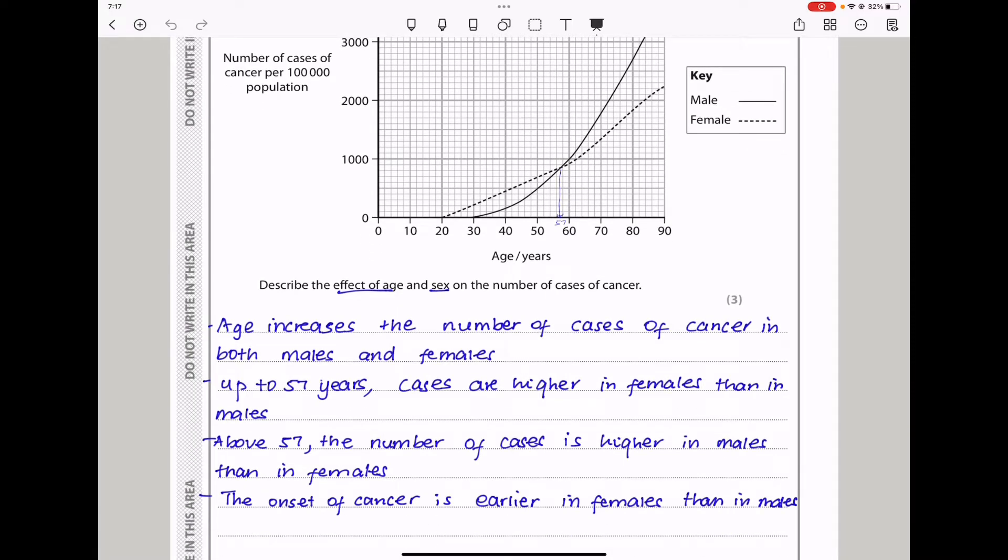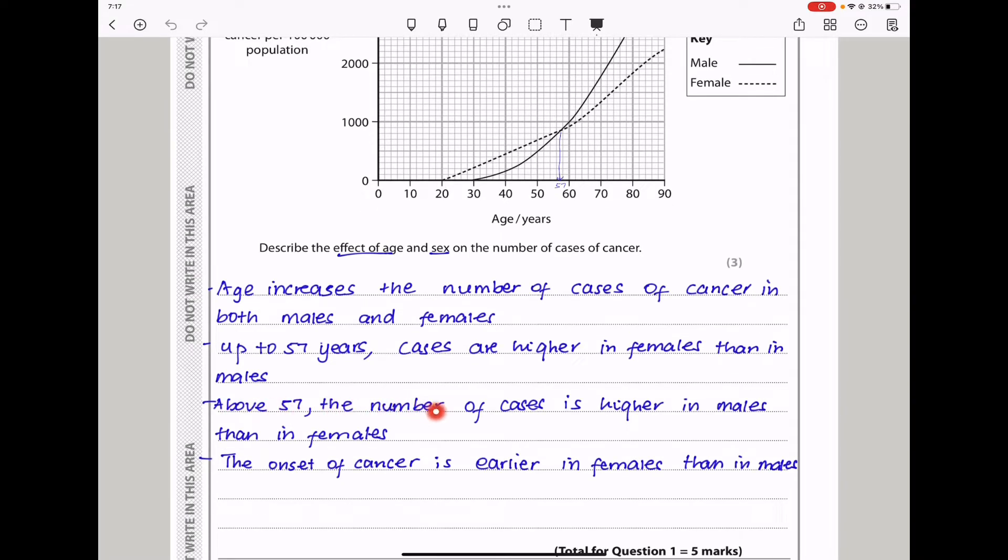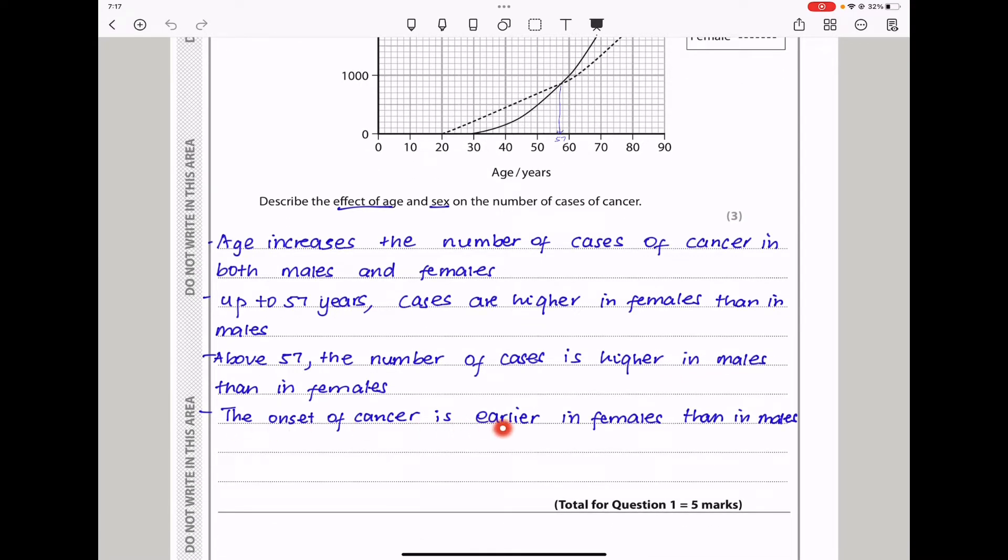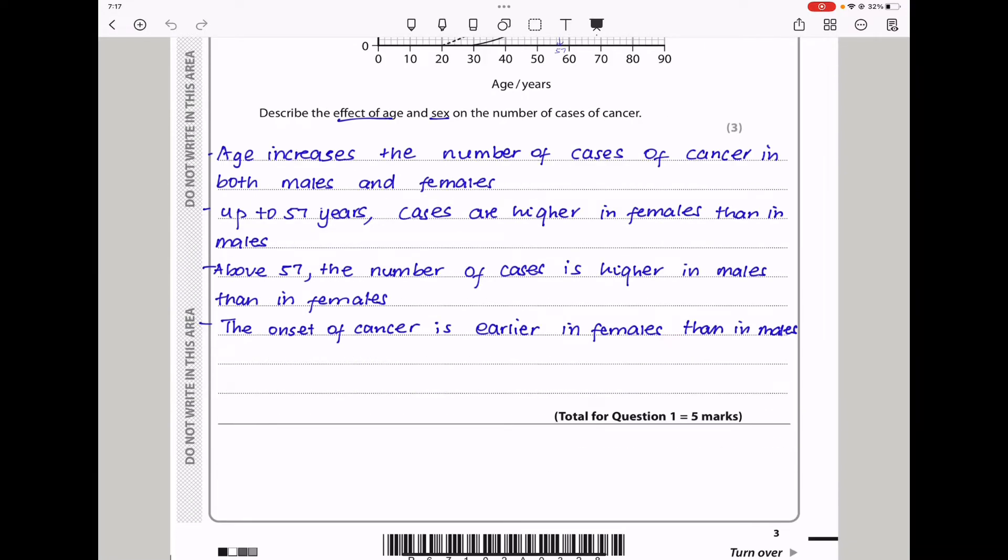So I said age increases the number of cases of cancer in both males and females. That is observed from the data. We can see for both cases, as age increases, we can see the number of cases also increase. And also we can see that up to 57 years, the cases are higher in females than in males, while after 57 years, the number of cases is higher in males than in females. Also, the onset of cancer is earlier in females than in males.